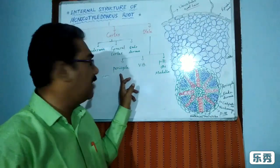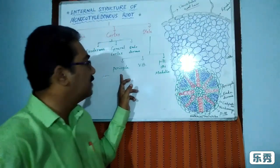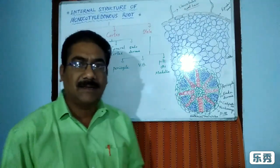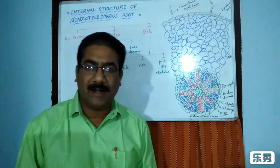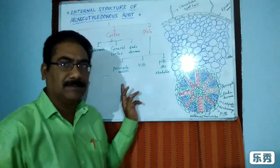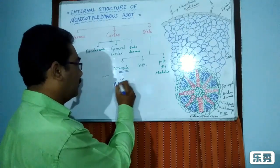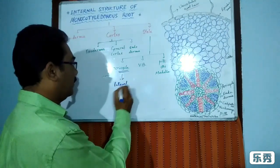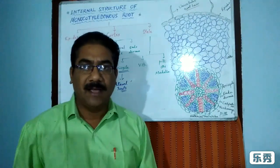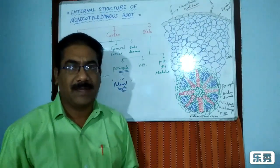The stele has three zones: pericycle, vascular bundles, and pith or medulla. The pericycle is the outermost layer of the stele. The most important character of the pericycle is that it gives rise to lateral roots — lateral roots originate from the pericycle. This is a very important point for examinations.